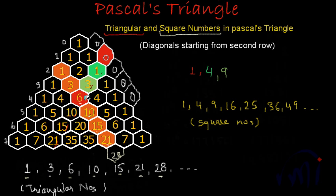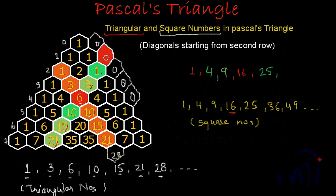Adding 6 and 10 gives 16, the fourth square number. Adding 10 and 15 gives 25, the fifth square number. Adding 15 and 21 gives 36, the sixth square number. The next term in the triangular diagonal was 21 plus 7, which is 28. So 21 plus 28 is 49, which is the seventh square number.